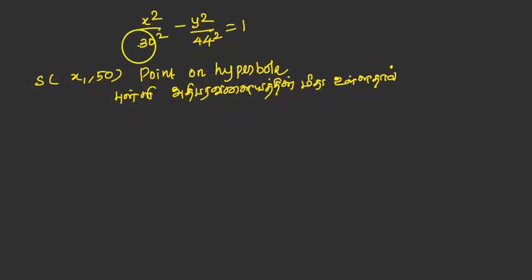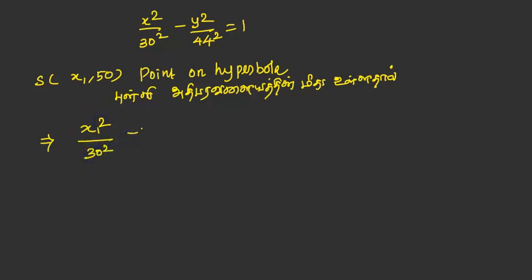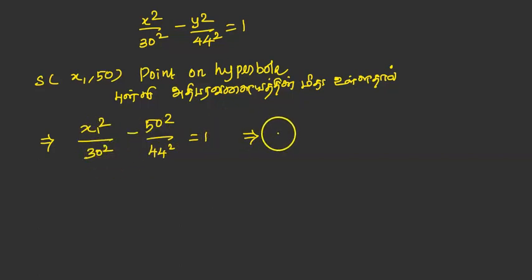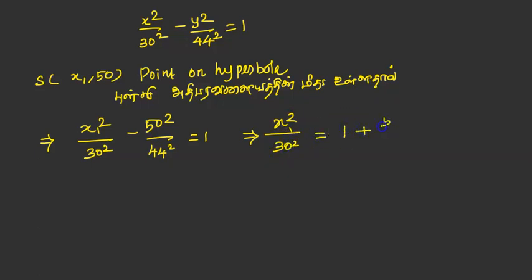We substitute the x and y point on the top. What we need to do is: x₁² / 30² minus y squared. y is 50. So 50² / 44² equals 1. Now let's solve for x₁. x₁² / 30² equals 44² plus 50² divided by 44².